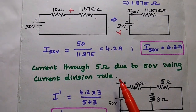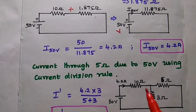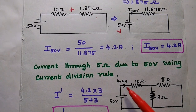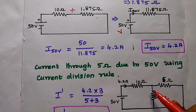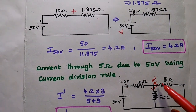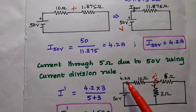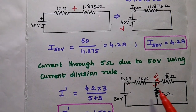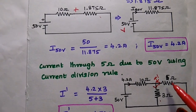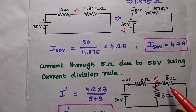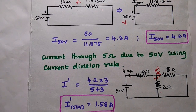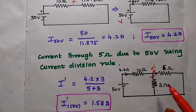Next we are going to find out the current through the 5 ohm resistor due to this 50 volt. We can use current division rule because this total current is getting divided between these two branches. I dash is equal to the total current 4.2 ampere multiplied with the opposite resistor 3 ohm divided by the sum of these two resistance values. We get I dash due to this 50 volt as 1.58 ampere.